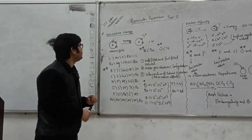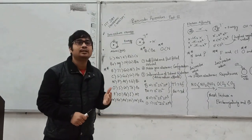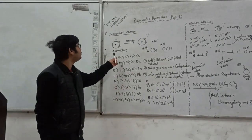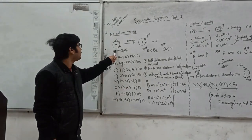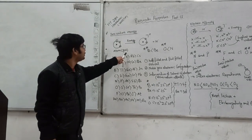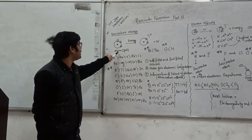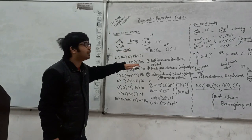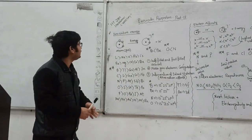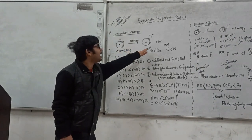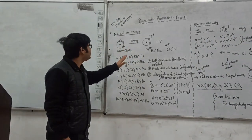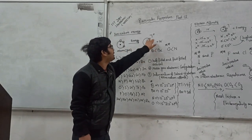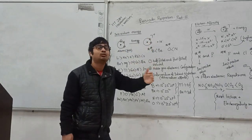Ionization energy is defined as the energy required to remove an electron from an atom in the gaseous state. That means, if one atom is there in the gas phase and we want to remove one electron from the atom, then whatever energy we need to provide, that is known as ionization energy. If we remove one electron, the atom becomes positive — that means the atom is converted into an ion.